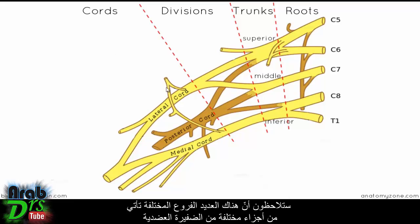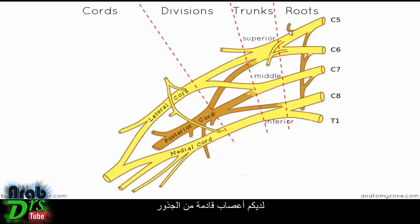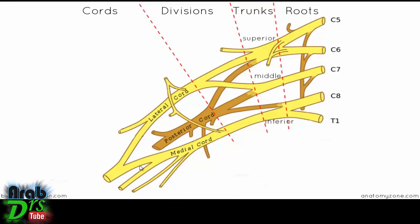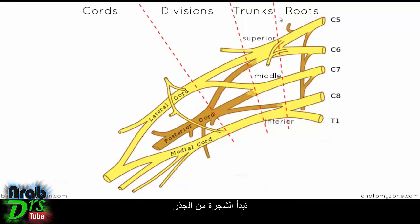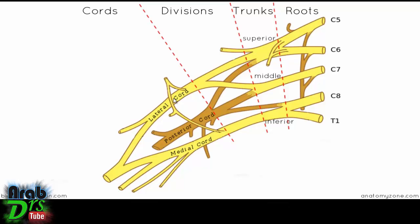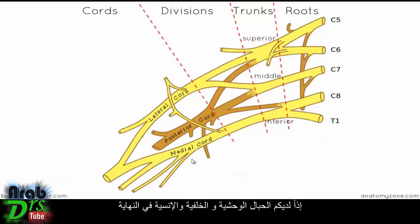There are several branches coming off the various parts of the brachial plexus — nerves coming off the roots, nerves coming off the trunks, no nerves coming off the divisions, nerves coming off the cords, and then terminal nerves. A good mnemonic is to think of a tree: it starts from the roots, then you've got the trunk, then the tree divides — giving you the divisions — and then you just have to remember the cords at the end: lateral, posterior, and medial.